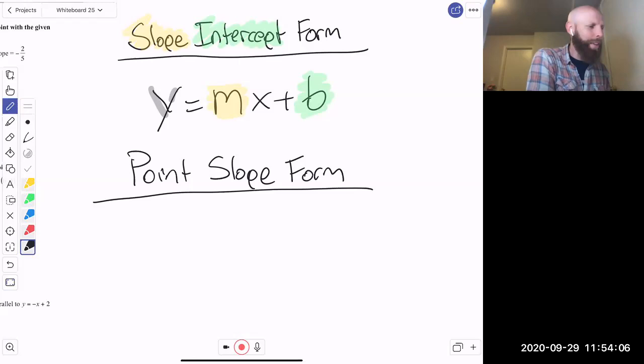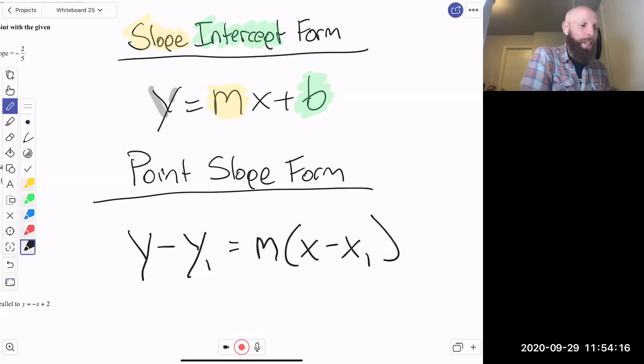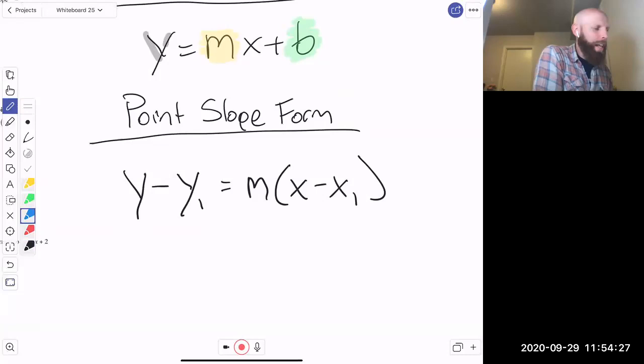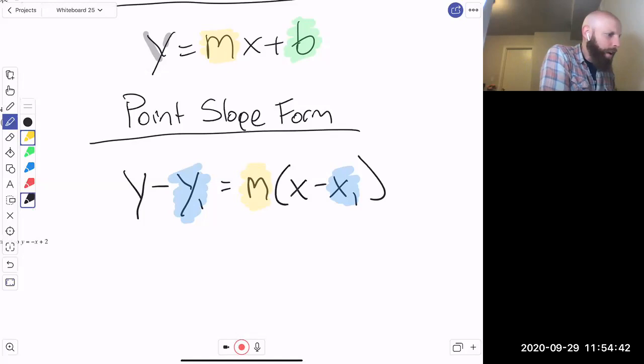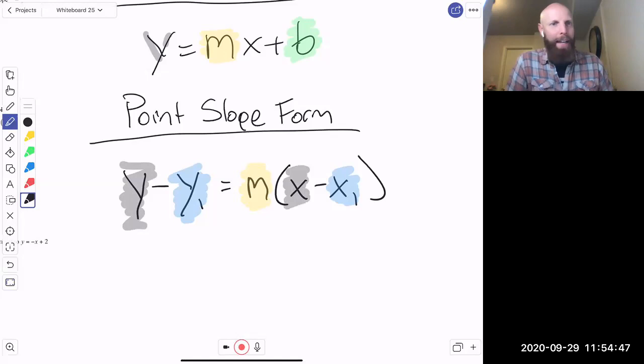So here's what the equation looks like: y minus y1 equals m times x minus x1. And we just leave it like that. That is the form. Now we can take that and convert it to slope-intercept, but we can just leave it like that as well. So what are the things that I need? I'm going to need a point because I'm going to need to know the x value of the point and the y value of the point. And I'm going to need to know the slope so that I can have that right there.